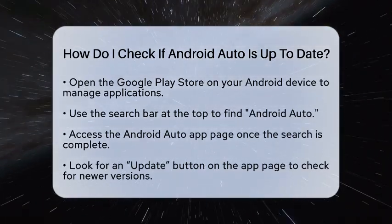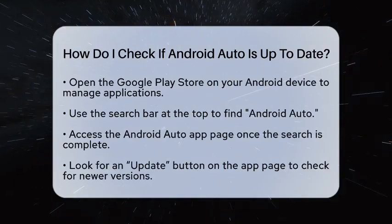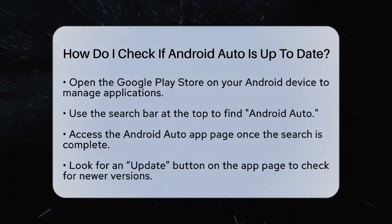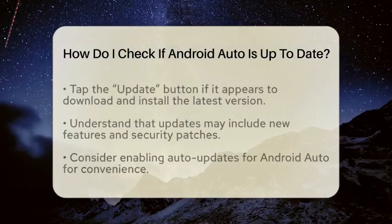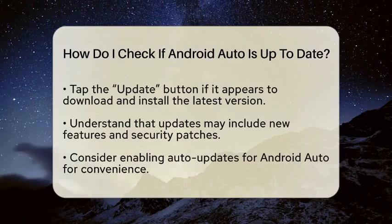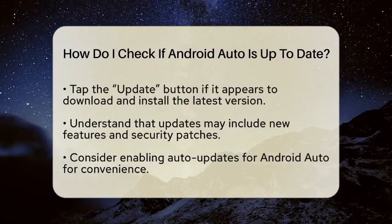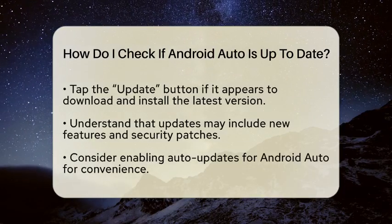Once you have the Google Play Store open, look for the search bar at the top of the screen. Type in Android Auto and hit Search. This action will take you directly to the app's page.